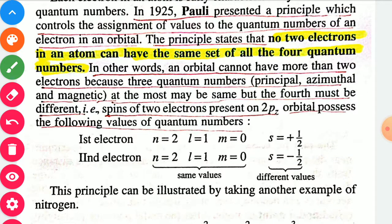For example, in the case of n equal to 2 (second shell), we take l value, m value, and s value. For l equal to 1 and m equal to 0, the spin quantum number s for the first electron is plus half.